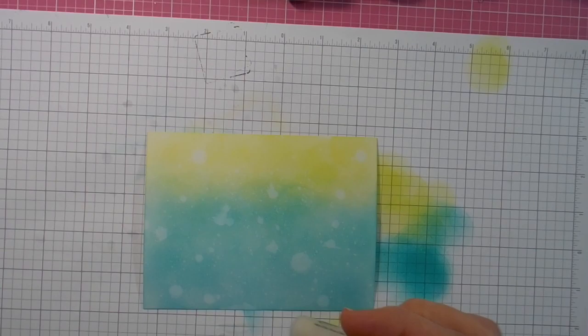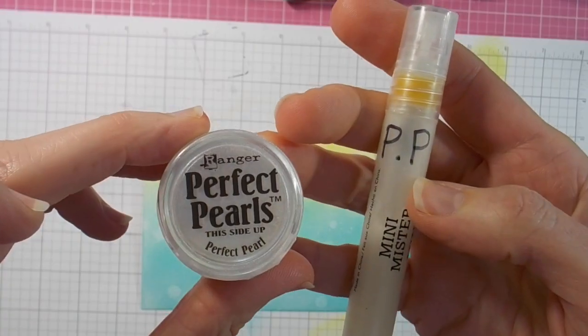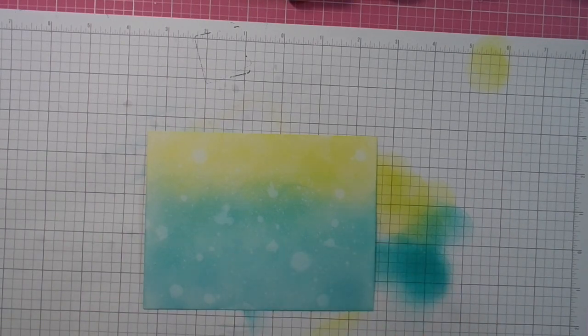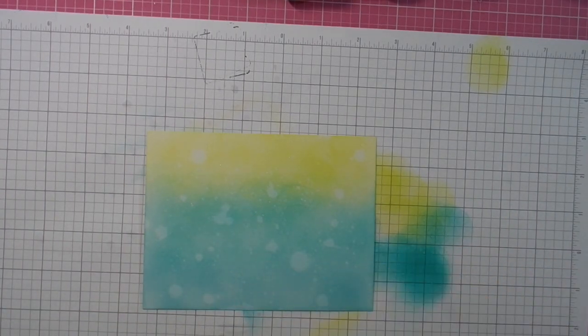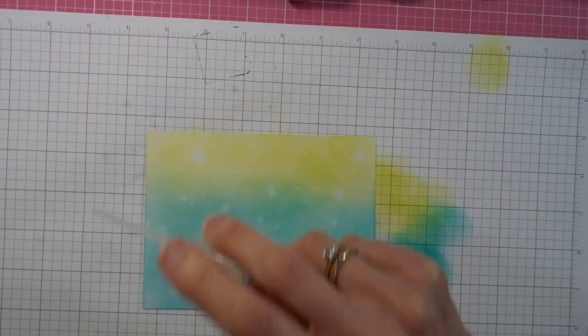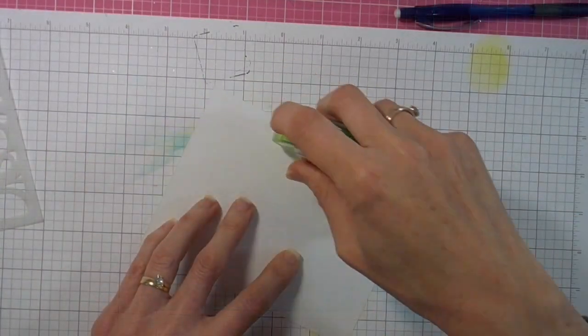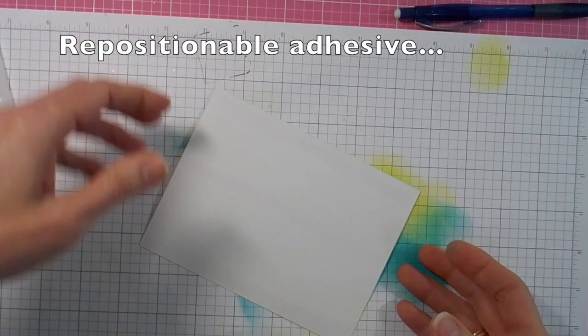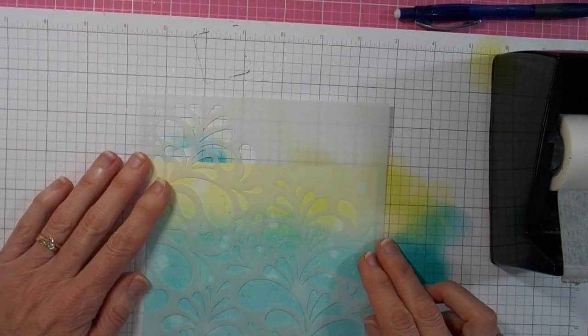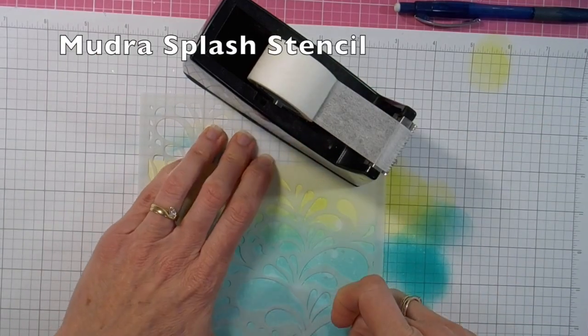So first of all, just spraying on some water, dabbing that off. And then I've mixed some Perfect Pearls powder into a little mini MISTI with some water, and I'm sprinkling that on all over. And that will just give the watery background a nice pretty shine. So a little bit of repositionable adhesive to hold that still.